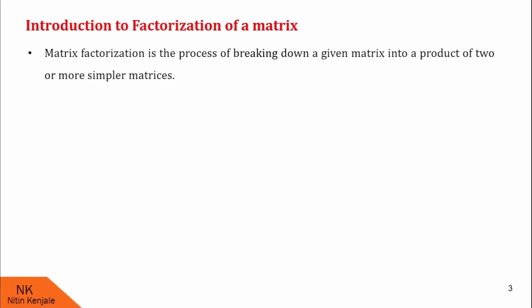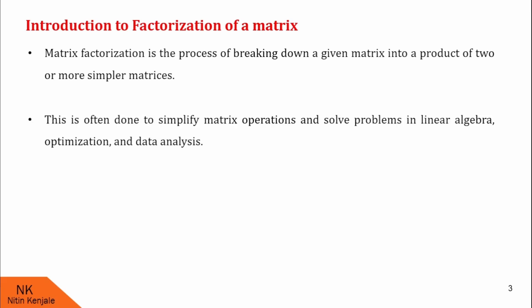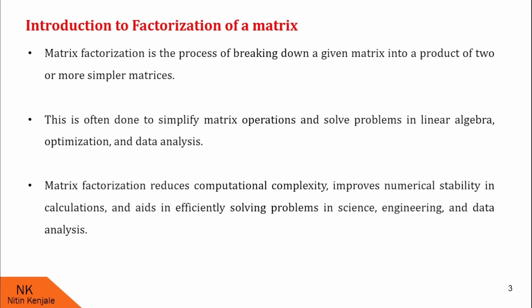Matrix factorization is the process of breaking down a given matrix into a product of two or more simpler matrices. That means a complex matrix A can be written as a product of two simpler matrices, say B and C, so A can be written as B into C. This is often done to simplify matrix operations and solve problems in linear algebra, optimization, and data analysis. Matrix factorization reduces computational complexity and improves numerical stability in calculations, and aids in efficiently solving problems in science, engineering, and data analysis.